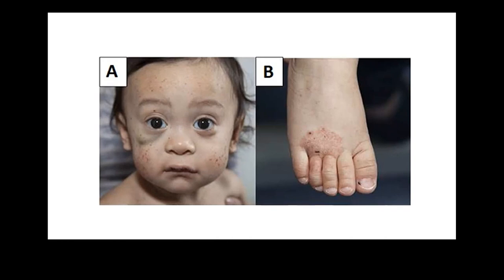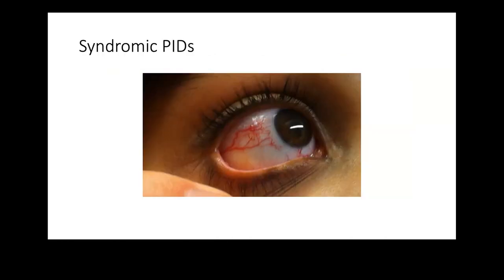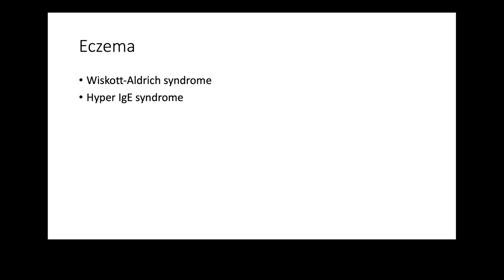Wiskott-Aldrich syndrome is classified as a syndromic primary immune deficiency, along with ataxia telangiectasia, DiGeorge syndrome, and hyper-IgE syndrome. Eczema is also seen in hyper-IgE syndrome, APECED, IPEX, and other immune deficiencies — so it is seen across quite a number of immune deficiencies.